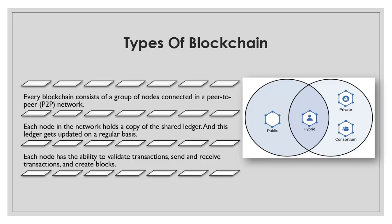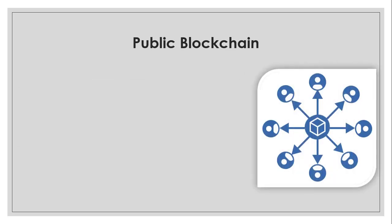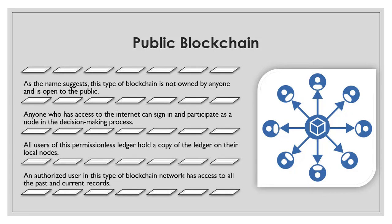Public blockchain is open to the public — it is not owned by anyone. Anyone with internet access can sign in and participate as a node in the decision-making process. All users hold a copy of the ledger on their local node. We can call public blockchain a permissionless blockchain, where authorized users have access to past and current records.